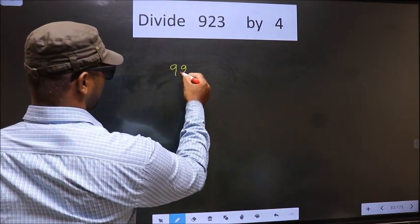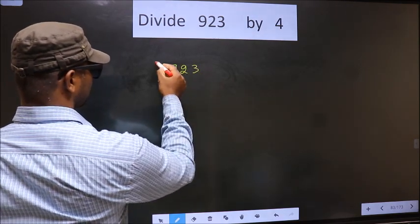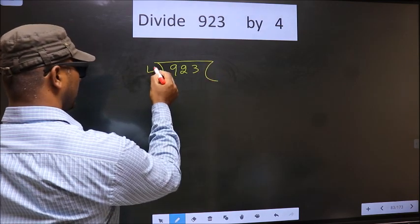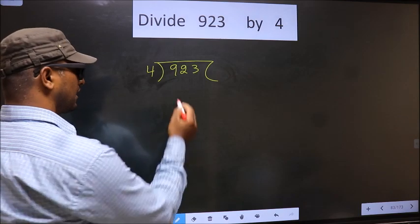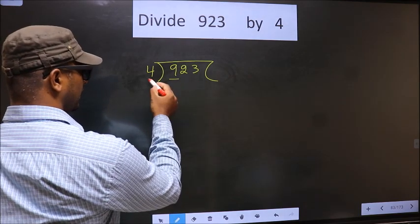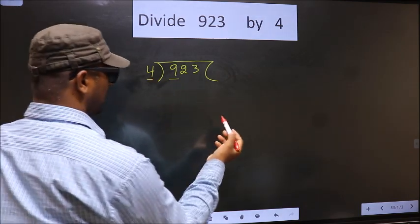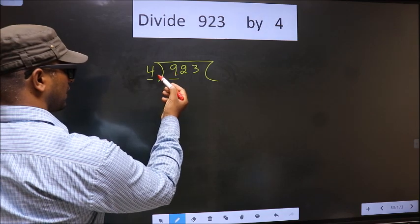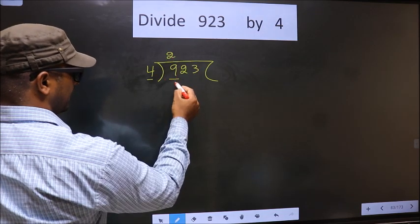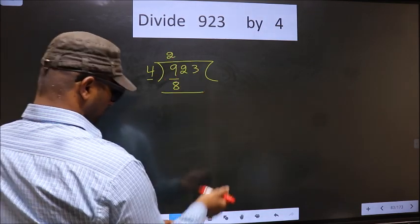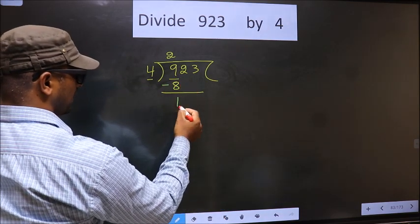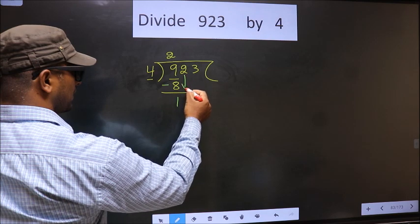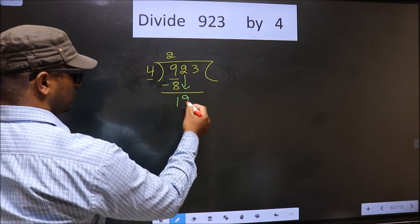That is 923, 4 here. Now here we have 9, here 4. A number close to 9 in 4 table is 4 2's 8. Now you subtract. 9 minus 8, 1. Now you bring down the beside number. So 2 down.